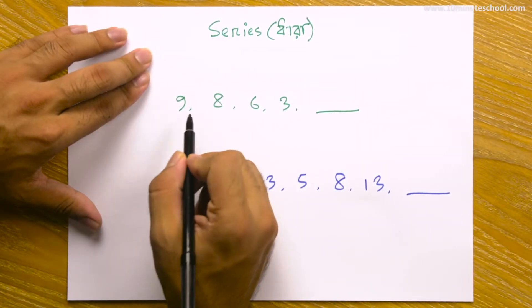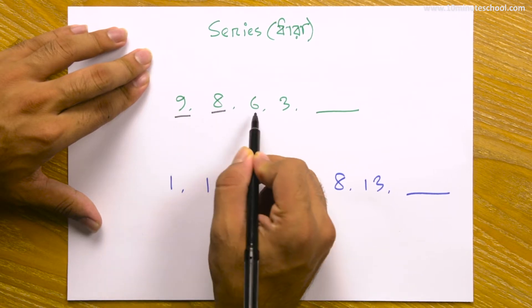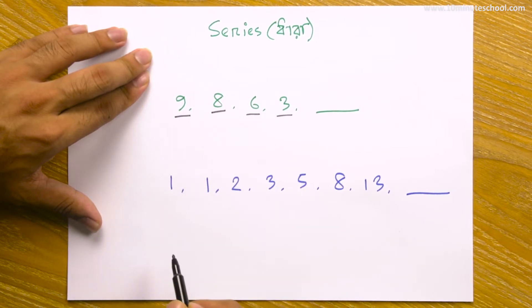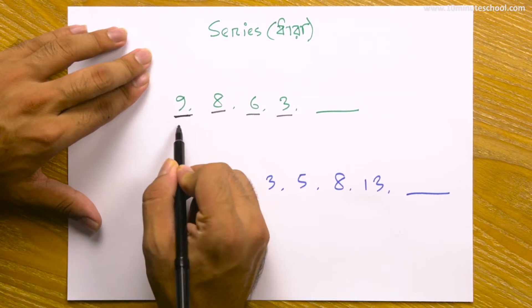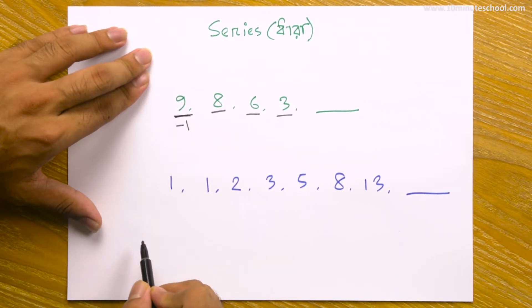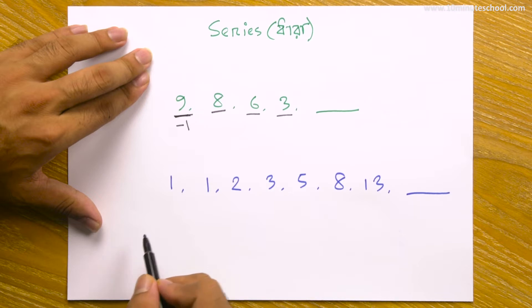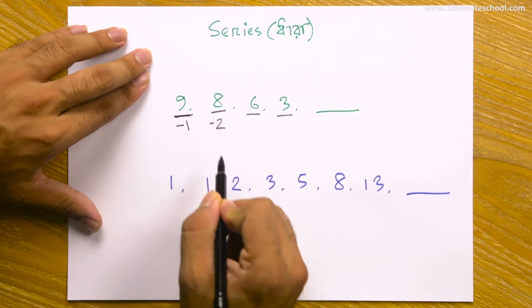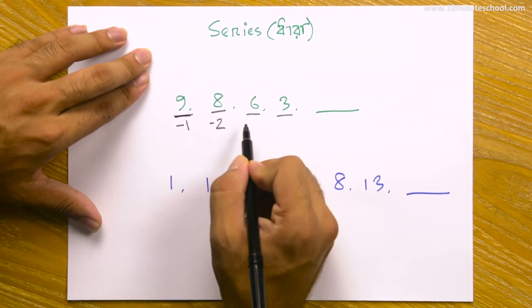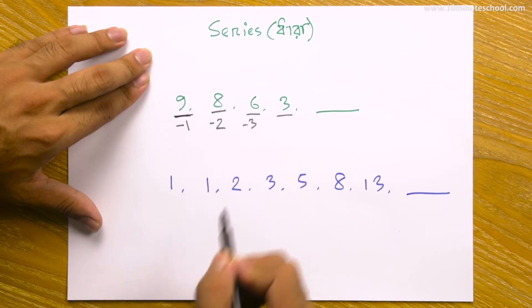The first series is 9, 8, 6, 3. Let's find the pattern. 9 minus 1 equals 8, then 8 minus 2 equals 6, then 6 minus 3 equals 3.